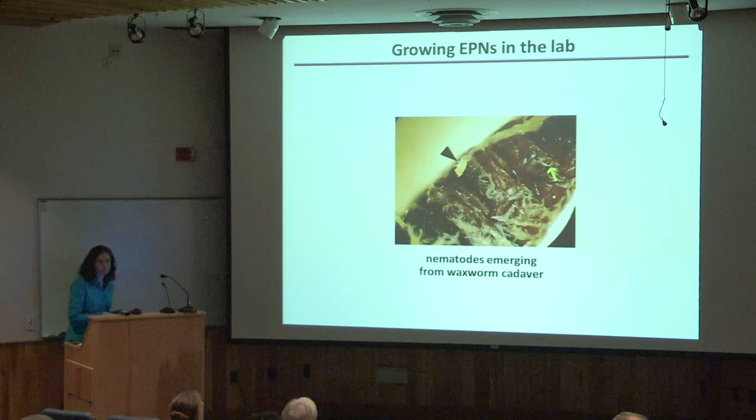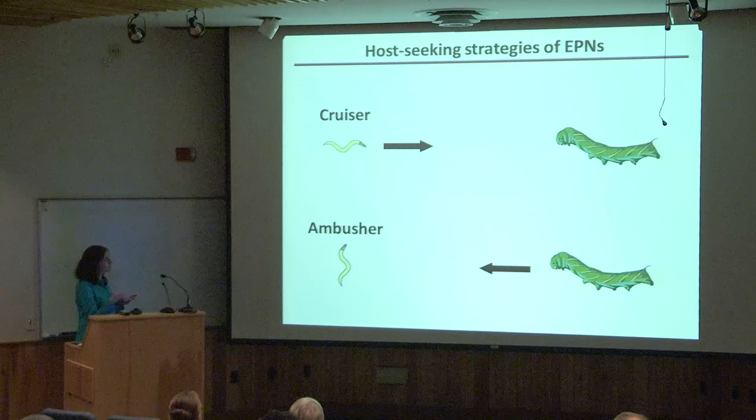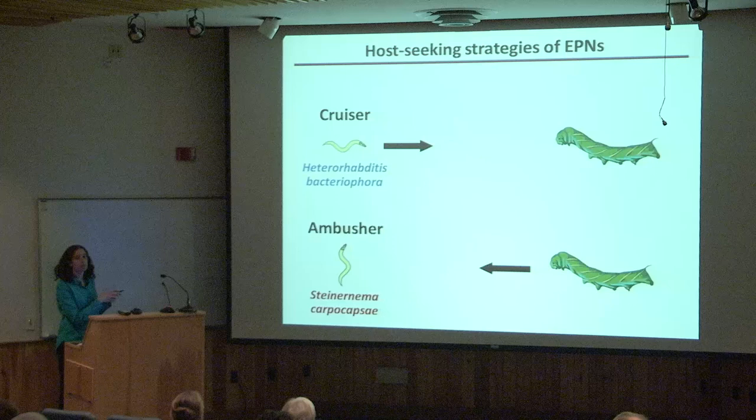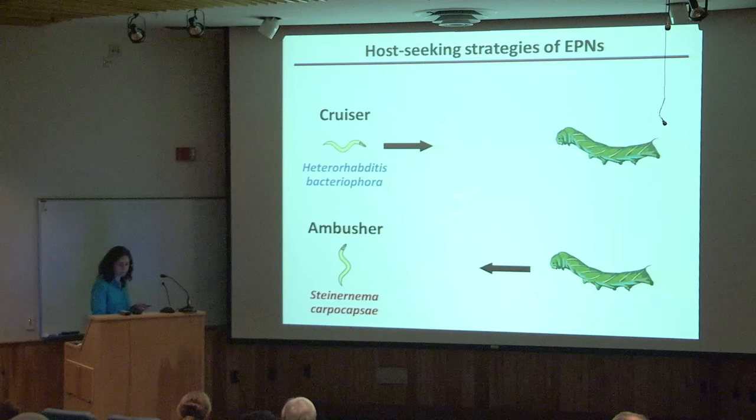Different EPNs use different strategies for finding hosts. Some species are 'cruisers' that actively move through the soil searching for hosts. Others are 'ambushers' that remain relatively stationary, often nictating — standing up on their tails and waving their heads — waiting for a host to come to them. Of the species we study, Heterorhabditis bacteriophora is a cruiser, and Steinernema carpocapsae is an ambusher. By studying both, we hope to understand what makes some worms cruisers and others ambushers.